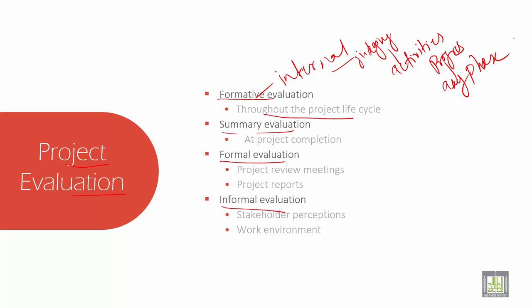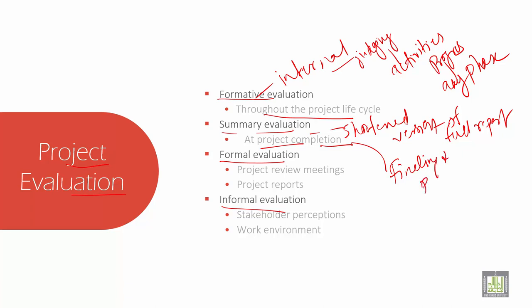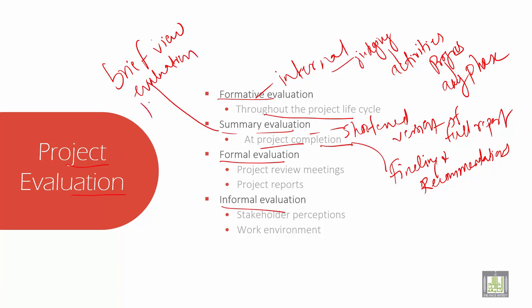Then you have summary evaluation. Summary evaluation is the executive summary of an evaluation report. It is a shortened version of the full report. It highlights findings and recommendations, and also gives a brief view of the evaluation purpose, key evaluation questions, and research options.